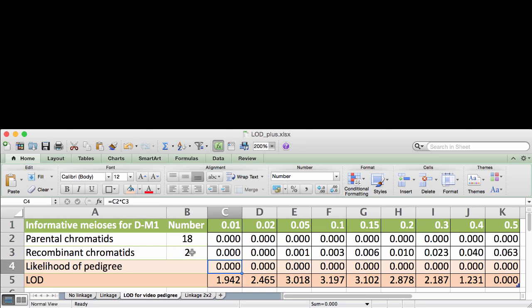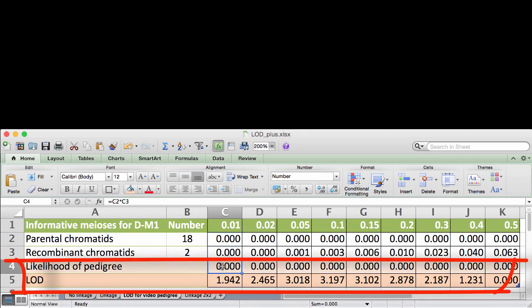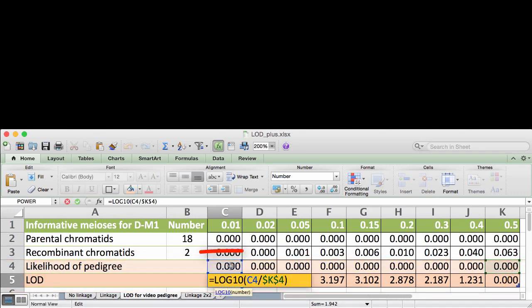Finally, it calculates the LOD by logging the ratio of linked versus unlinked likelihoods.